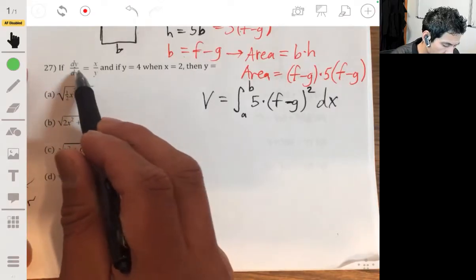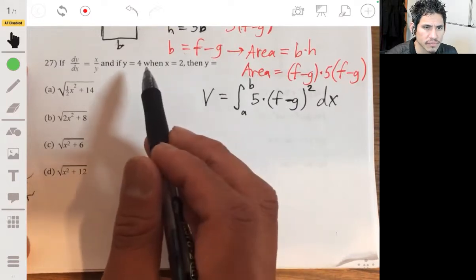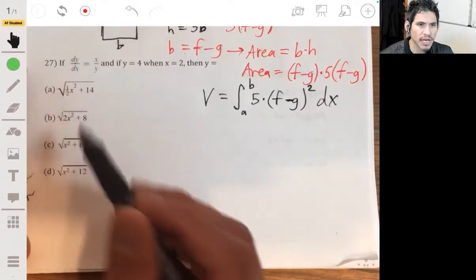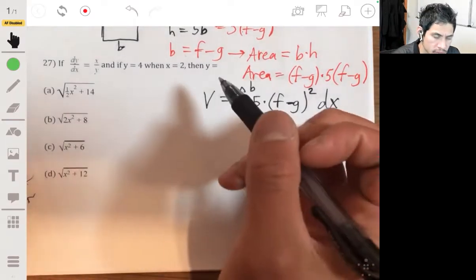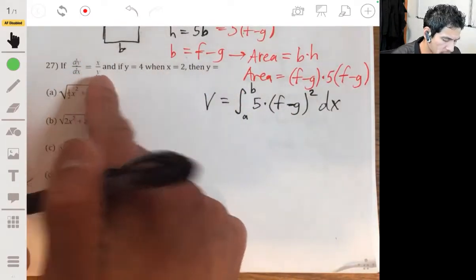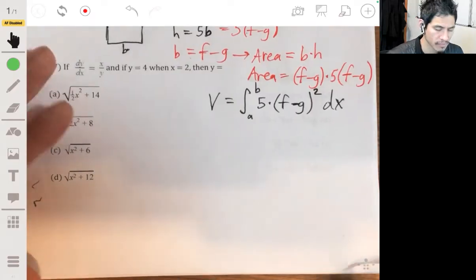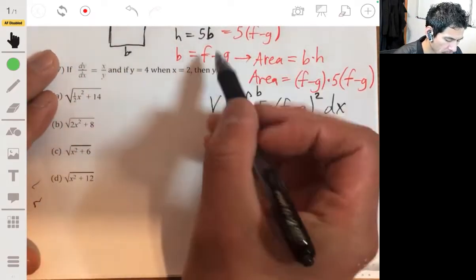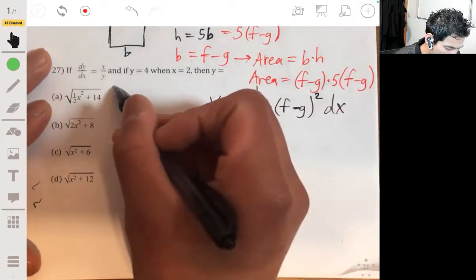So, 27. dy/dx is x over y, and if y equals 4 when x equals 2, then y equals... This is giving us an equation that describes how they're related to each other in terms of their rate of change. So we want to find an expression for y, or an equation for y. Let's look for an equation for y, so we're going to use integration.